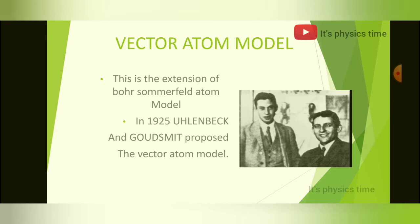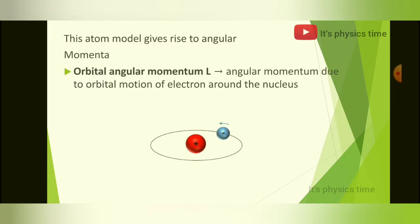Before going into the features, let us discuss about some basics. The vector atom model gives rise to angular momenta, which are orbital, spin, and total angular momenta. The angular momentum due to the orbital motion of the electron around the nucleus is known as orbital angular momentum, which is represented as L.